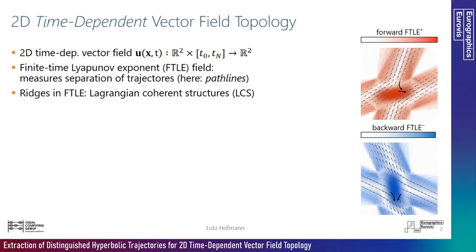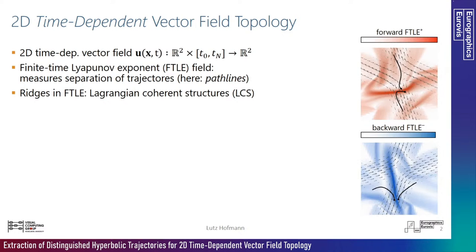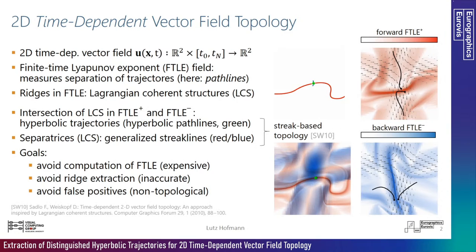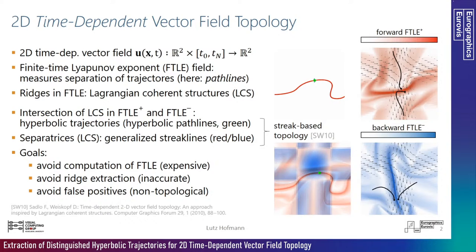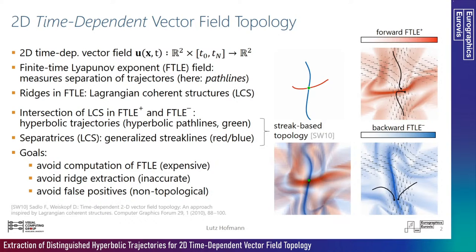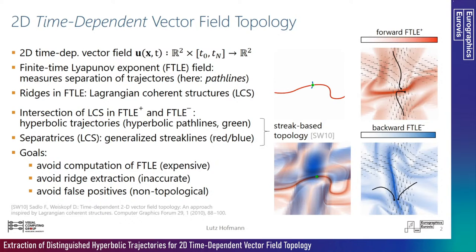In time-dependent vector fields, the FTLE measures the separation of pathlines. Ridges in the FTLE fields correspond to Lagrangian coherent structures (LCS), which are the main organizing structures of the flow. LCS in the forward and backward FTLE fields intersect in special pathlines called hyperbolic trajectories. LCS can also be obtained by seeding generalized streak lines along the hyperbolic trajectories. In this sense, hyperbolic trajectories take on the role of saddle-type critical points, and LCS take on the role of separatrices — together called streak-based topology.